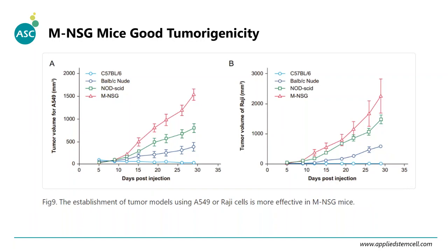Regarding tumorigenicity, comparing commonly used immunodeficient mice — nude, NOD-SCID, and NSG — using A549 and larger cell lines as tumor cells, NSG mice show much better tumor growth compared to other immunodeficient mice in both cell lines.